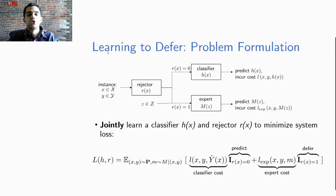Our goal is to jointly learn the classifier h of X and the rejector R of X to minimize the combined system loss which is the classifier cost if we predict and the expert cost if we defer.